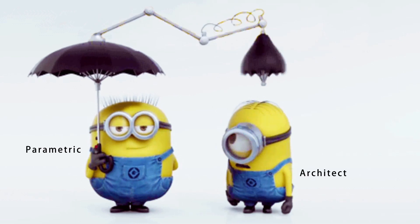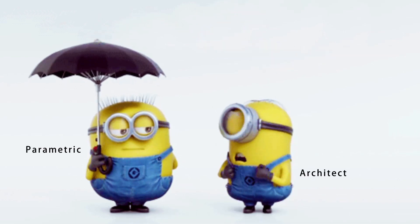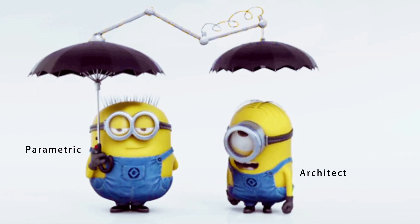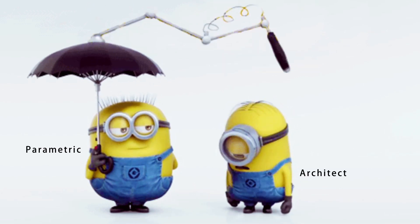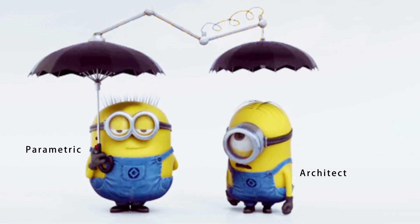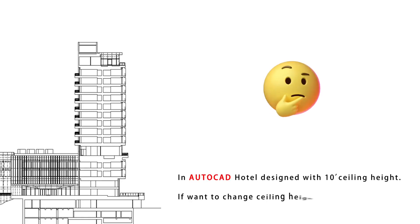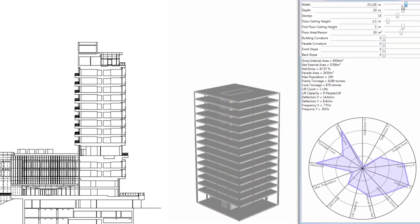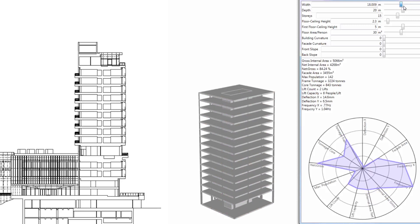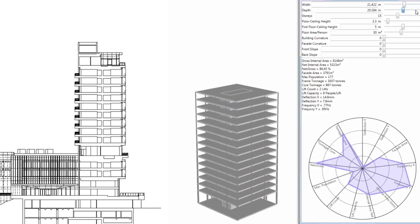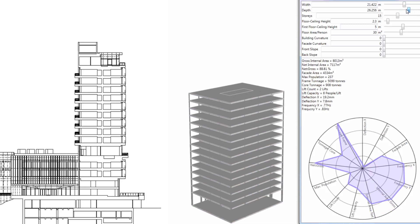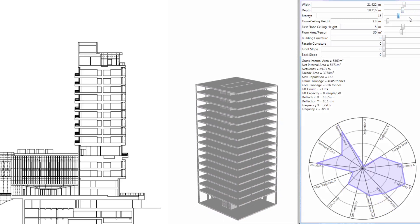The parametric process is also a technical advantage for architects. For example, in AutoCAD, if a 10-floor hotel is designed with 10-foot ceiling heights and you later need to change to 12 feet, you must stretch or delete and redo each floor individually. But in the parametric process, with a single click the design is managed — just change 10 feet to 12 feet and it updates easily.